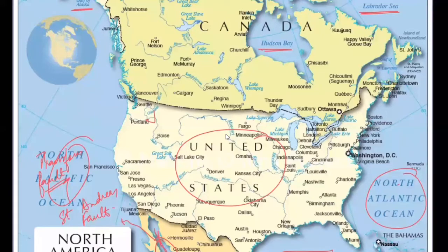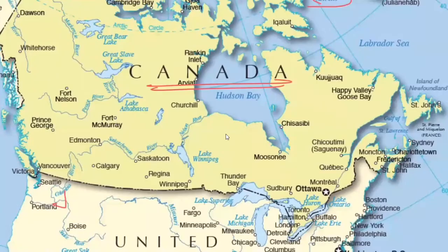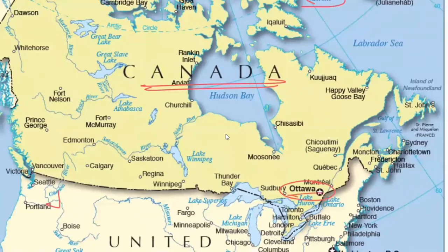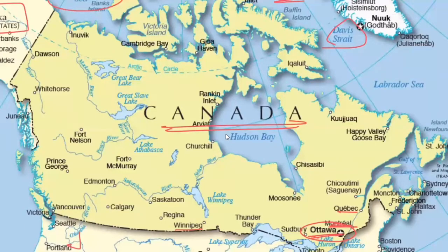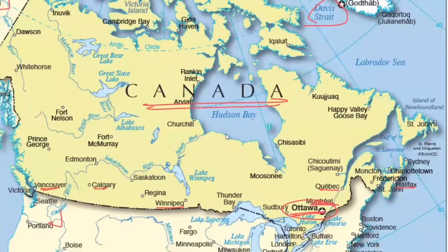Now let's see the important capital cities. Canada's capital is Ottawa, which is on the south-eastern side. Important cities in Canada include Montreal, Winnipeg, Quebec, Halifax, Calgary, and Vancouver. Most of Canada's land is not as urbanized as the United States, and all the major cities are towards the south, connected to the US.